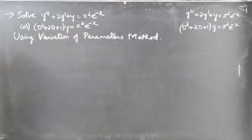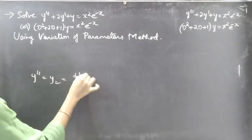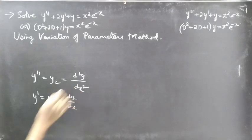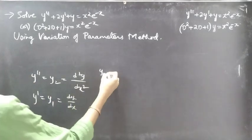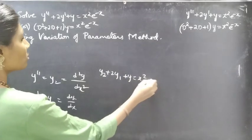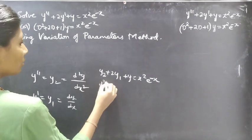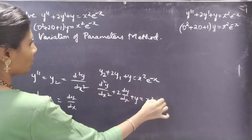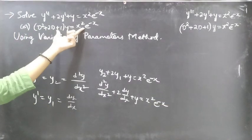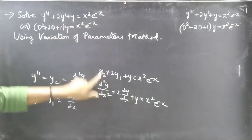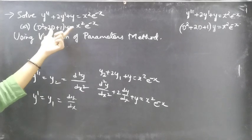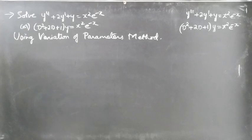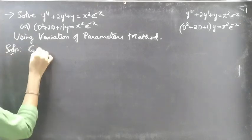Here y'' is nothing but D²y/dx² and y' is nothing but dy/dx. We can write the same equation in another form: y'' + 2y' + y = x²e^(-x), or D²y/dx² + 2·dy/dx + y = x²e^(-x). This is the equation in operator form, and we are given a differential equation of order 2.